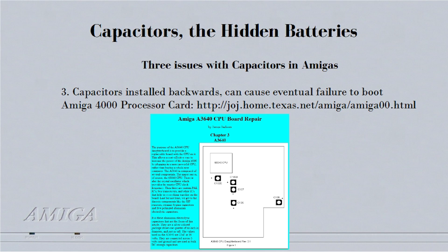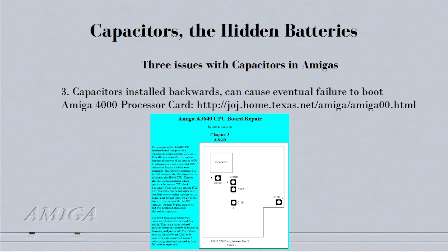The other problem is the backwards installed capacitors, and this is a big problem in the 4000. It's a polarized capacitor that's in the audio circuit that is the wrong type. The backwards installed capacitors are a very big problem on the CPU card that's in the 4000.